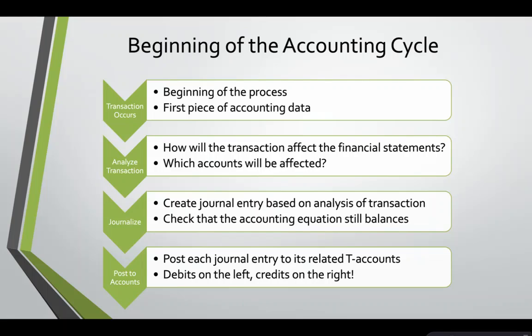Our third step is to create a journal entry based off of the analysis of the transaction. Our journal entry would be a debit to inventory and a credit to accounts payable. Since we're debiting an asset, inventory, our assets will increase.